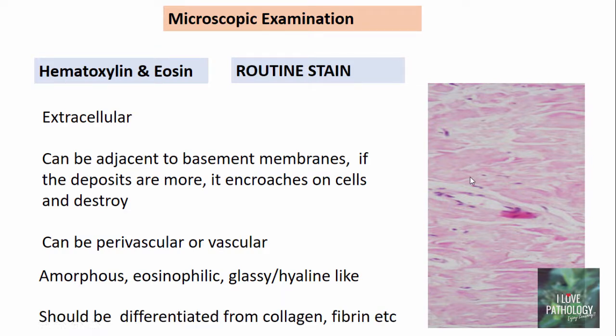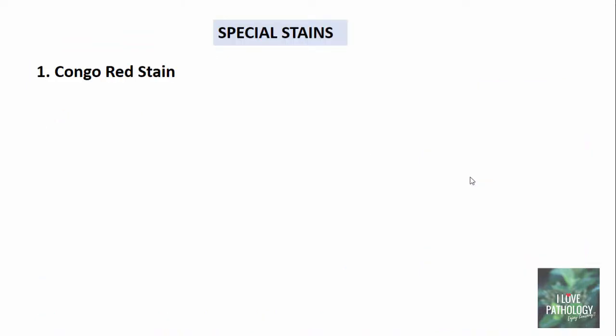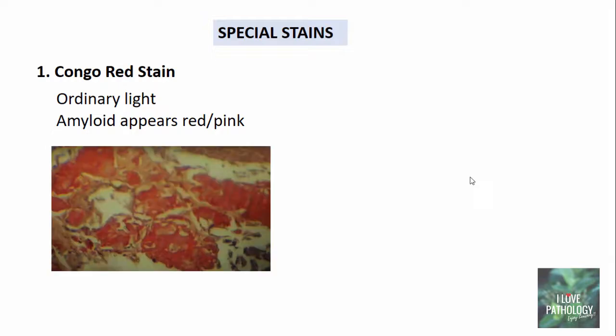Amyloid must be differentiated from other similar-appearing tissues like collagen and fibrin. To do this, special stains are required. The most important special stain used in demonstrating amyloid is Congo red stain. When sections are stained with Congo red and observed under ordinary light, the amyloid appears red or pink in color.